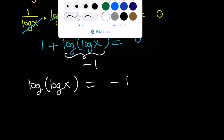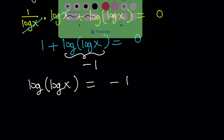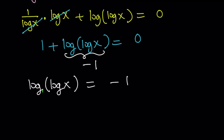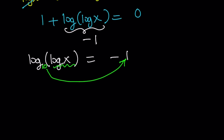Since the base is not written, let me write that down — the base would be 10. So by using our definition, we can safely say that this is 10 to the power negative 1, and it should equal log x. In other words, we get log x equals 10 to the power negative 1. And 10 to the power negative 1 is the reciprocal, so we can write it as 1 over 10.